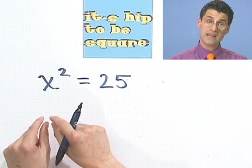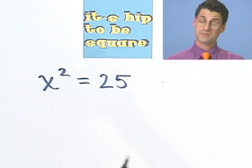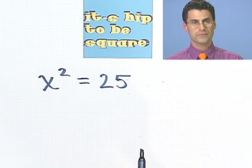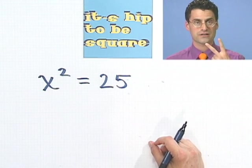But actually, that's not the only solution. Because what happens if, for x, I put in minus 5? Well, if I take minus 5 and square it, that's minus 5 times minus 5, I'd still get 25 because those negative signs would drop out. So we see there are two answers.